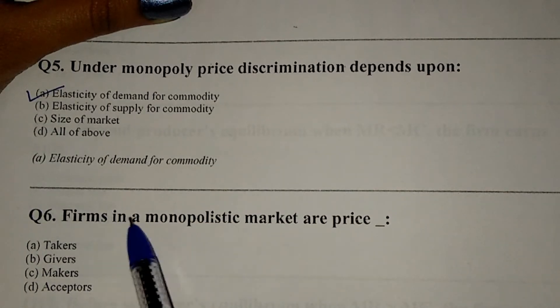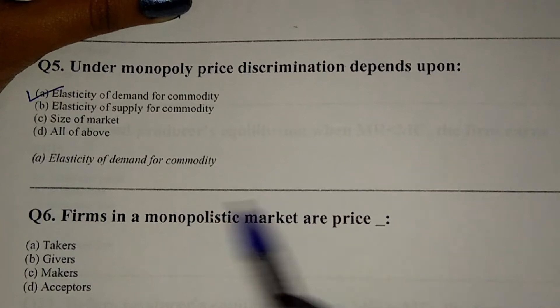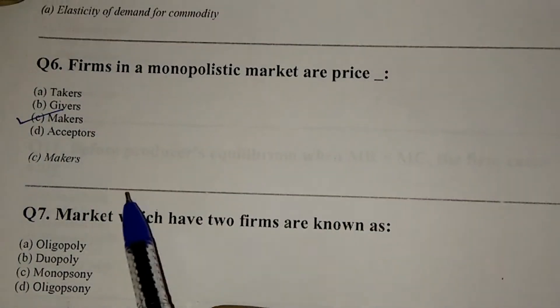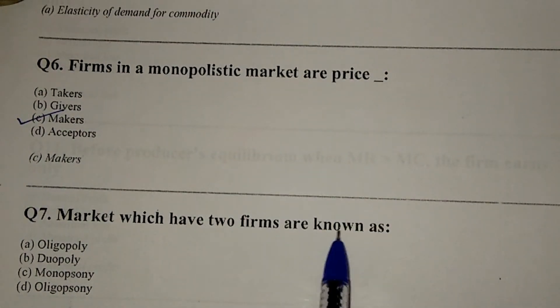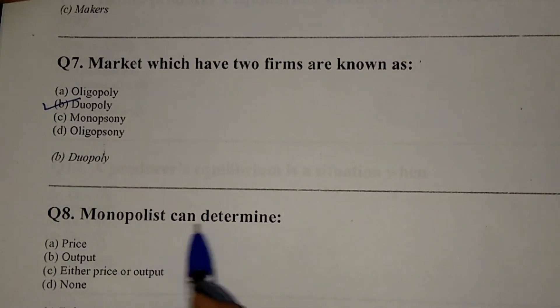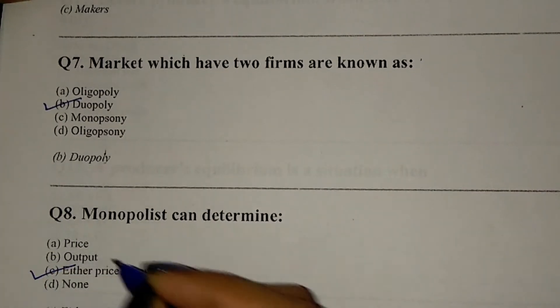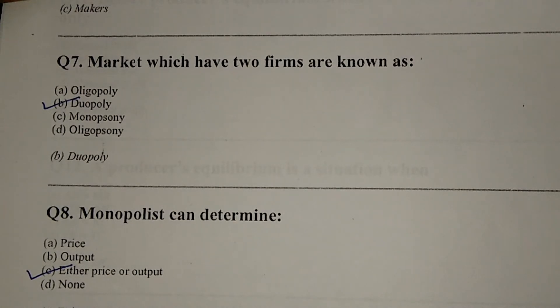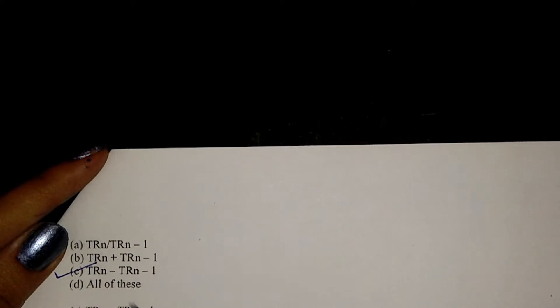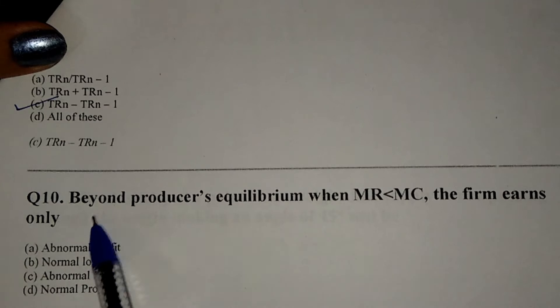Firms in a monopolistic market are price makers — option C. Markets which have two firms are known as duopoly — option B. A monopolist can determine either price or output — option C.